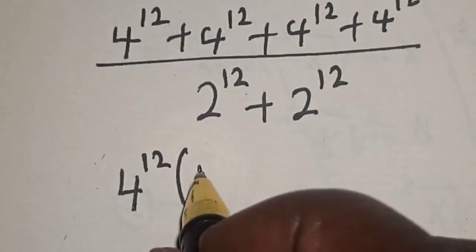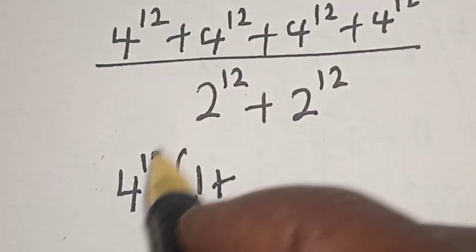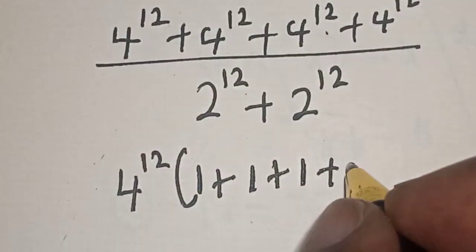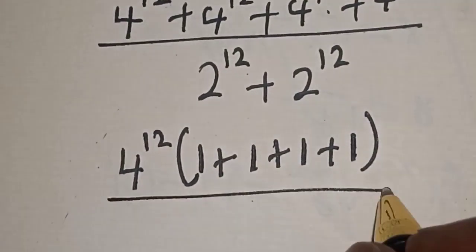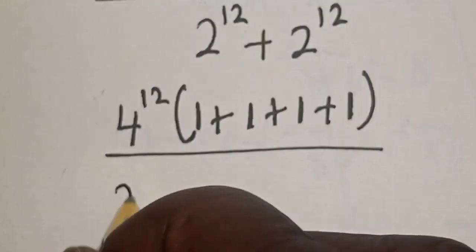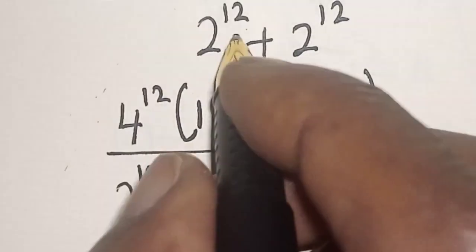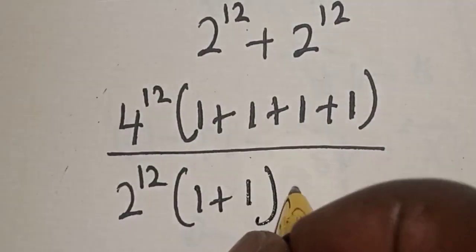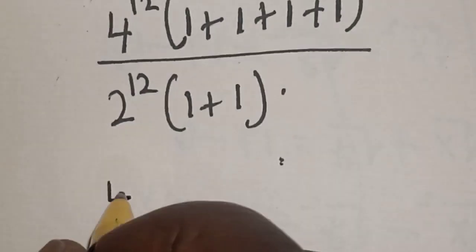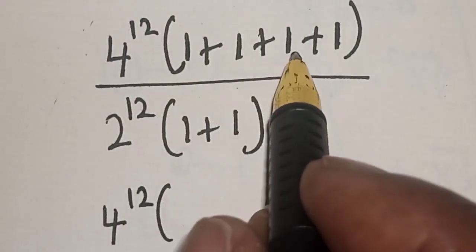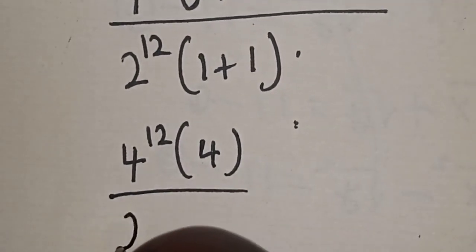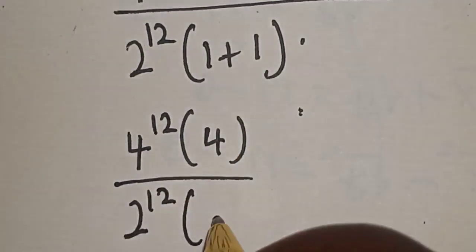Factoring out 4 raised to power 12 from the numerator gives us 4 raised to power 12 times (1 plus 1 plus 1 plus 1), which equals 4 raised to power 12 times 4. For the denominator, 2 raised to power 12 is common, giving 2 raised to power 12 times (1 plus 1), which is 2 raised to power 12 times 2.